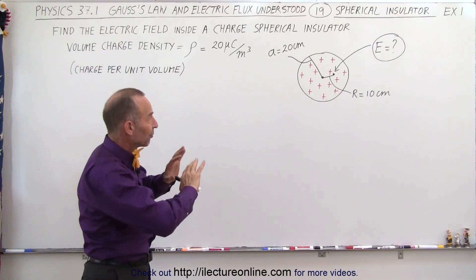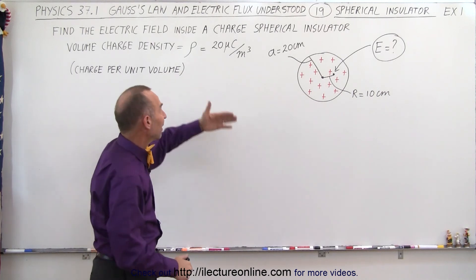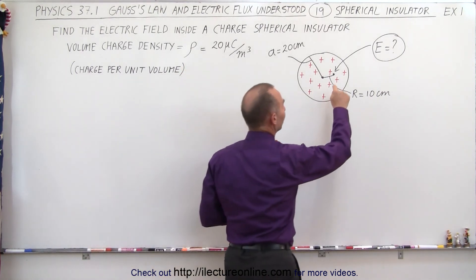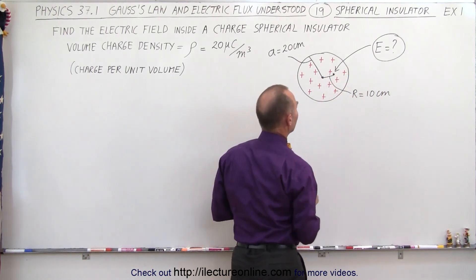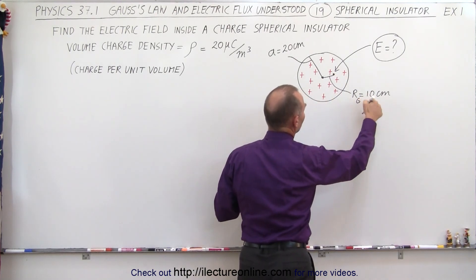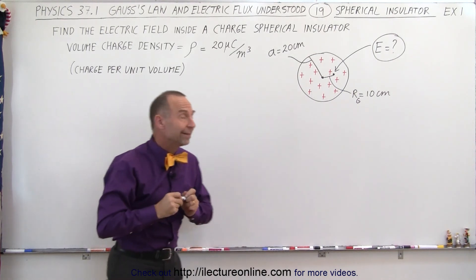Notice that we have a charge distribution indicated by the charge density per cubic meter. In this case, 20 microcoulombs per cubic meter. And we're trying to find the electric field strength halfway between the center and the edge of the sphere. So the radius, the Gaussian radius R sub G, is equal to 10 centimeters. The radius of the sphere itself is equal to 20 centimeters.